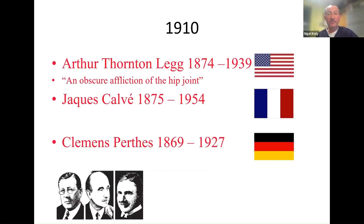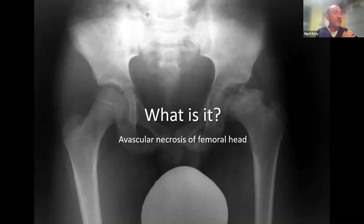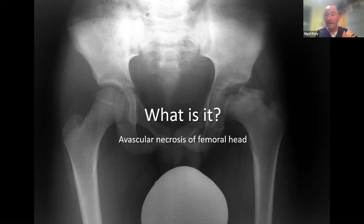So what is it? It's actually Legg-Calvé-Perthes disease. It was described quite early on in 1910 — remember x-rays had only been around since the late 1800s. Three people described it at a similar time but Perthes sort of won the race, and that's what we tend to call it now. The Americans often call it LCP if you look at American literature. Initially people weren't really sure what it was — they thought maybe it was TB affecting the hip — but we now call it avascular necrosis of the femoral head, meaning the blood supply has been damaged, the bone becomes dead, and then it gets replaced by new bone.